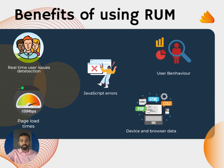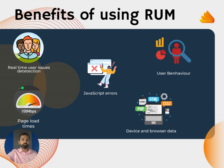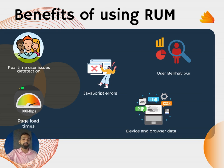The fifth benefit is getting browser and device data — metadata that helps you understand what devices and browsers your users are using most. Many libraries have version-specific issues. If something is breaking in a different version of a browser, your RUM system will surface that, and you can go ahead and fix it. There are multiple real-world instances of this kind of issue being caught through RUM.